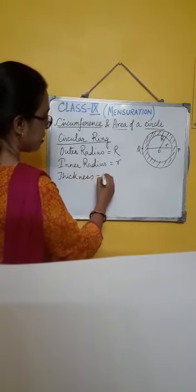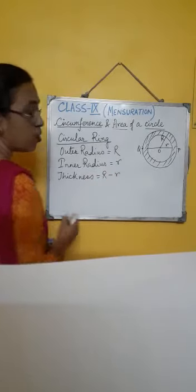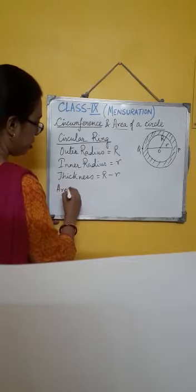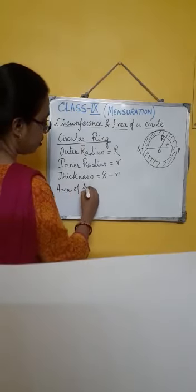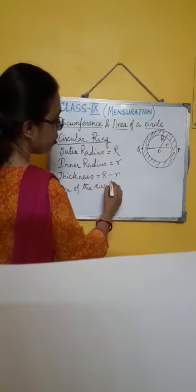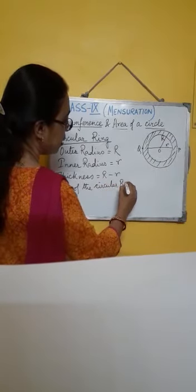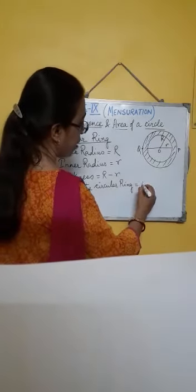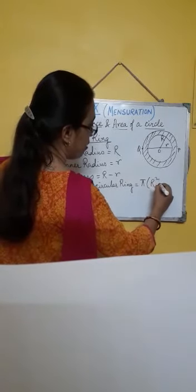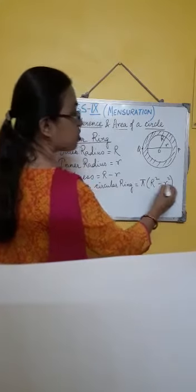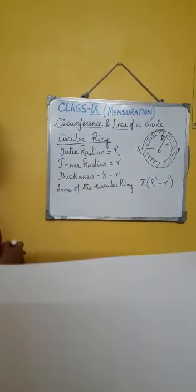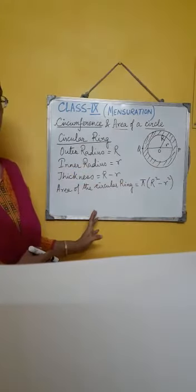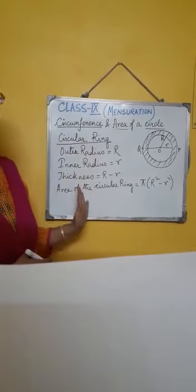The thickness of the circular ring is given as capital R minus small r. The area of the circular ring is given as π(R² − r²). This is all about the circular ring.